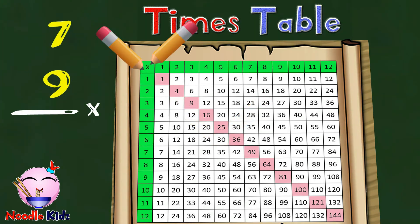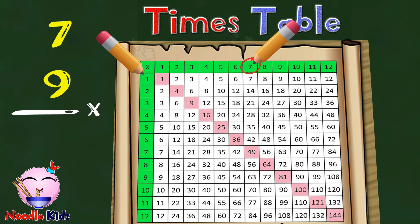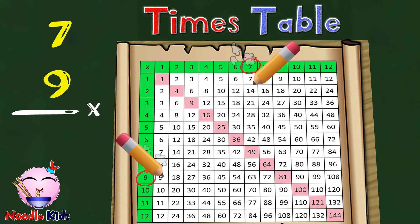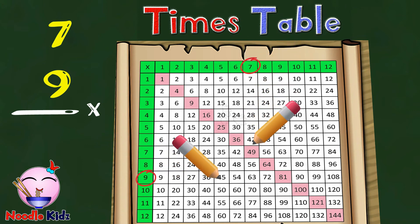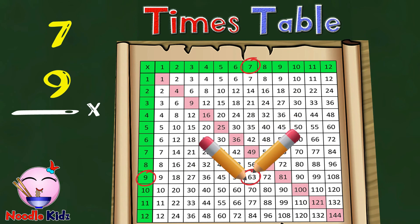Now let's do it together. What is the result for seven times nine? Let's go! Did you get sixty-three? Good job!